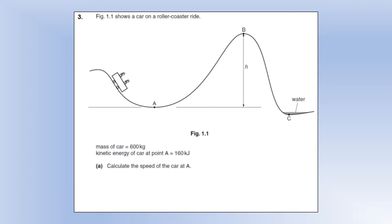The diagram shows a car on a roller coaster ride. The mass is 600 kilograms and the kinetic energy is 160 kilojoules, or 160,000 joules. Calculate the speed of the car at A. We know the kinetic energy and the mass, so we rearrange and solve for velocity — 23 metres per second.